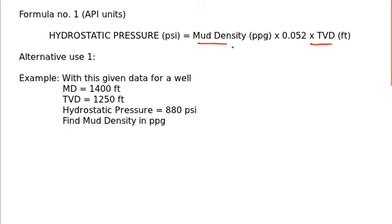First, I will show you the alternative use to find mud density. Take up this example. We have a well and we are at a measured depth of 1400 feet where TVD is 1250 feet and hydrostatic pressure is 880 psi. You have to find mud density at that point.